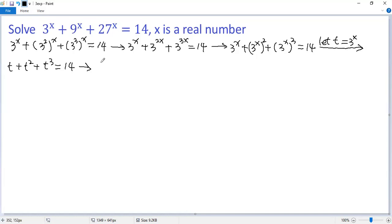We can rewrite the equation as t cubed plus t squared plus t, then move 14 to the left side, so minus 14 equals 0.